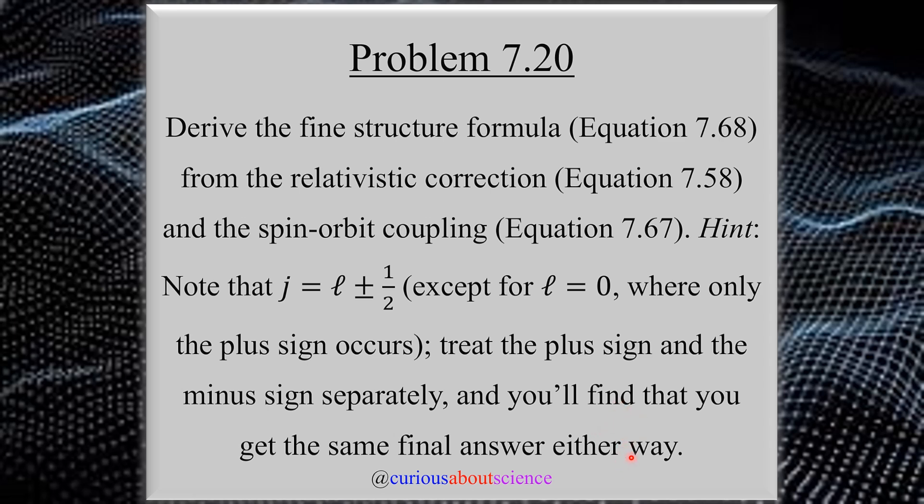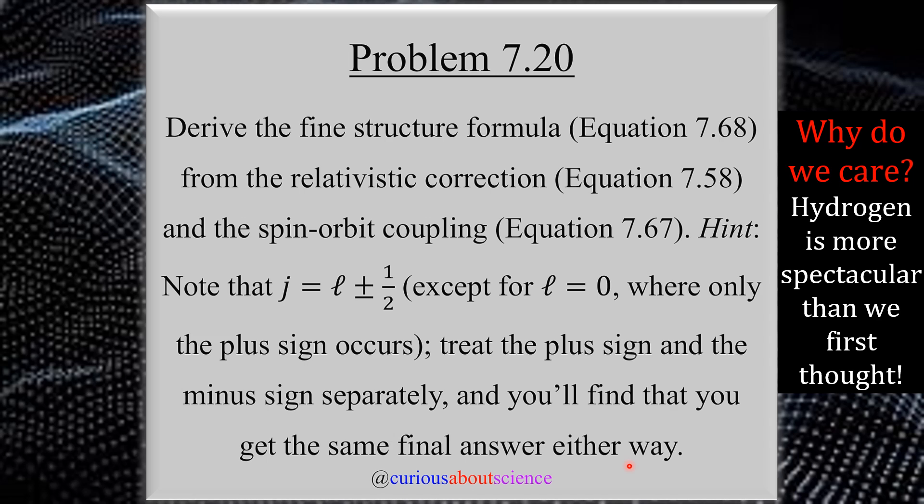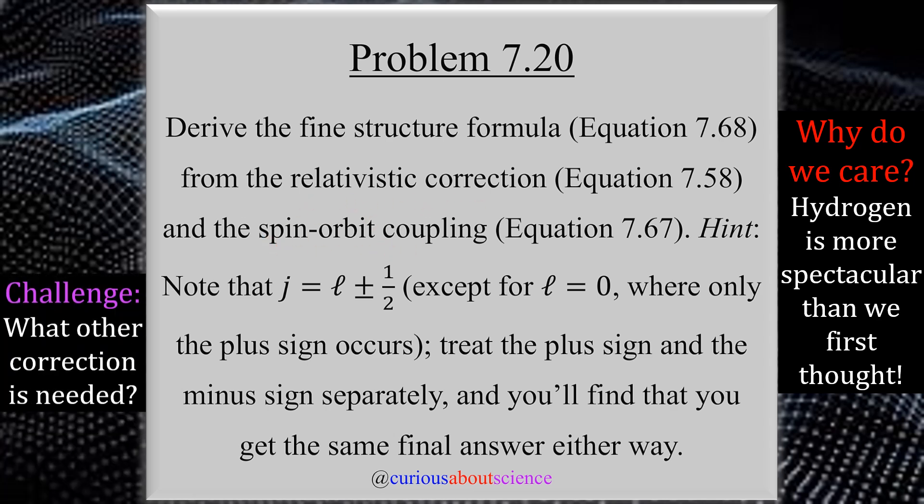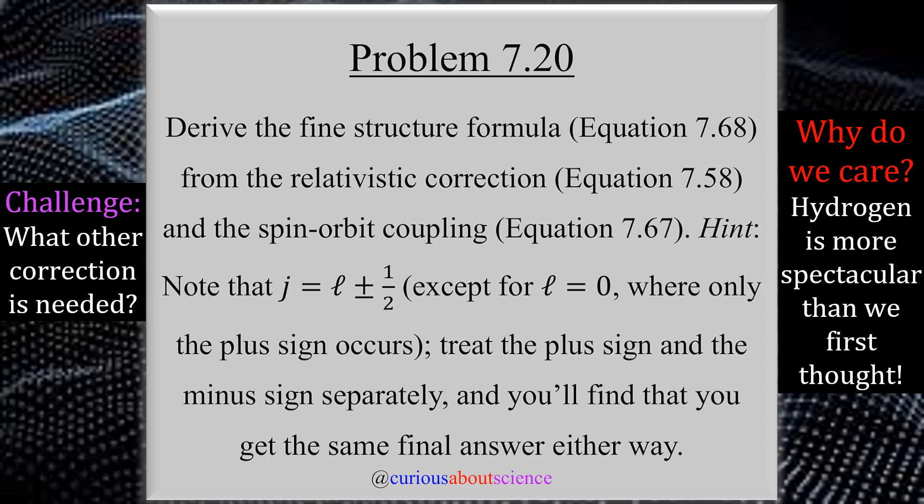So this is setting up to be a really fun problem. Why do we care? Well, hydrogen is more spectacular than we first thought. In fact, Paul Dirac, Feynman, and others thought that our original assumptions were not just enough. Especially when we talk about the addition of a magnetic field, things get really crazy. So we have to take into careful consideration all factors. But in this problem, we're tasked with two correction terms here: relativistic and spin-orbit coupling. So the challenge for you is, what other correction is needed? Think about that as we move through this.